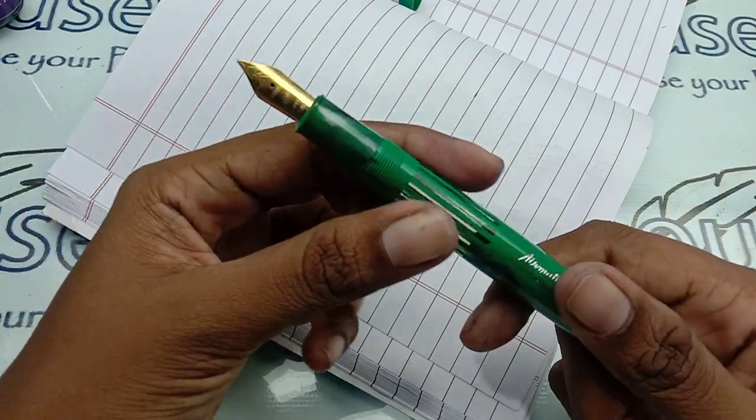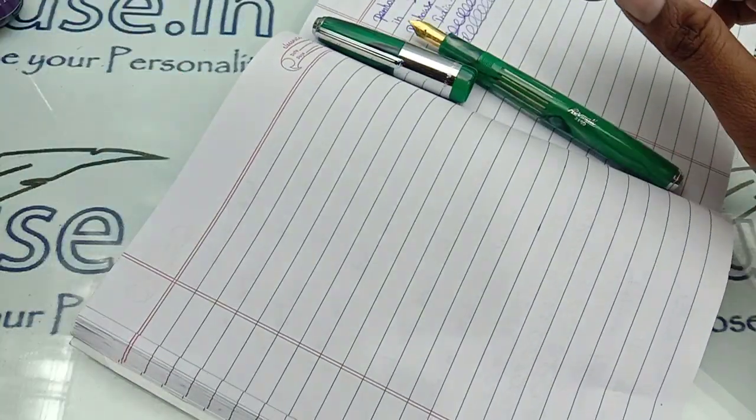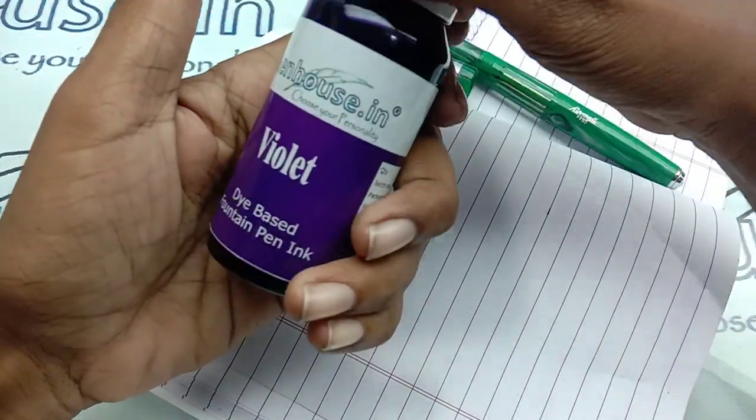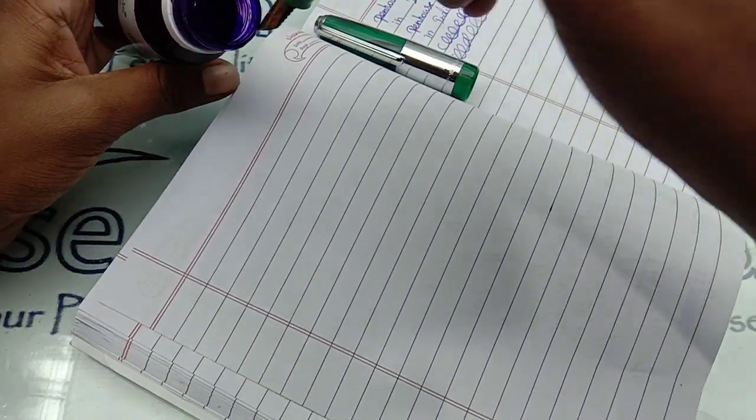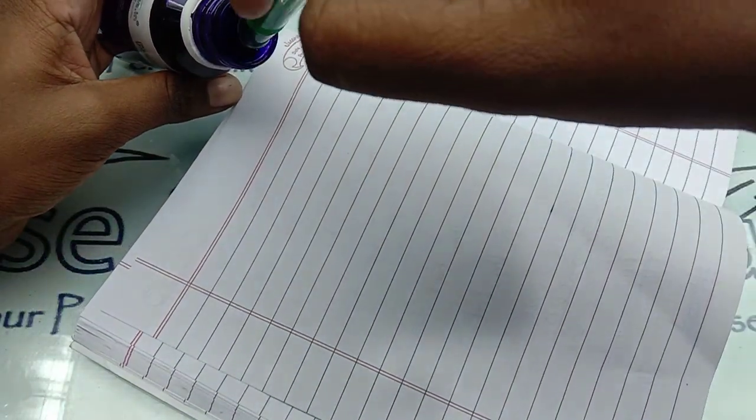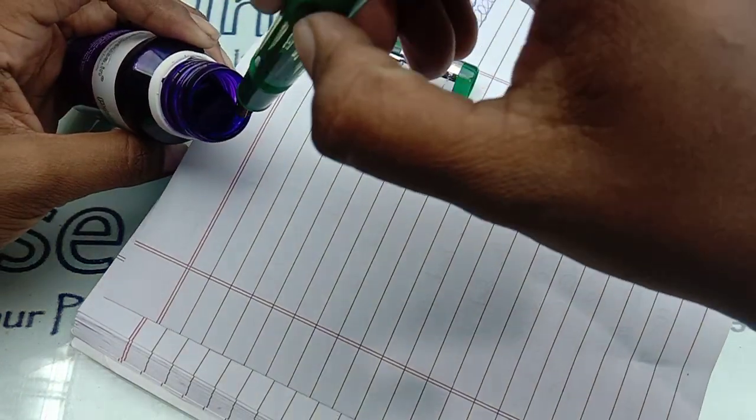Let me show you the writing of this pen. For today's writing, I'm going to use our Penhouse violet color ink, which is so charming and very elegant color for colorful writers. I'm just dipping a little.